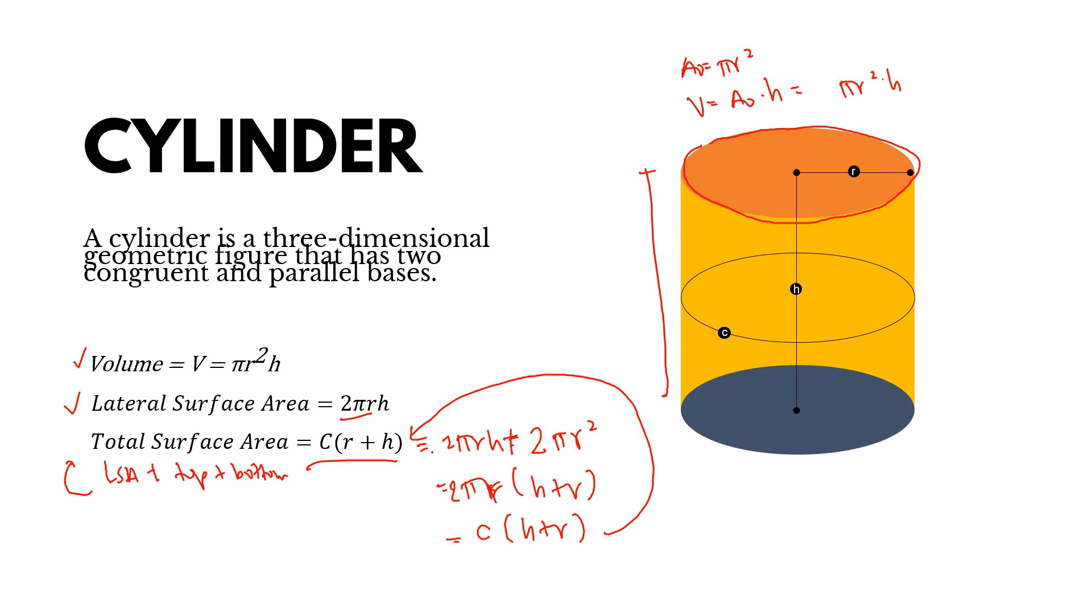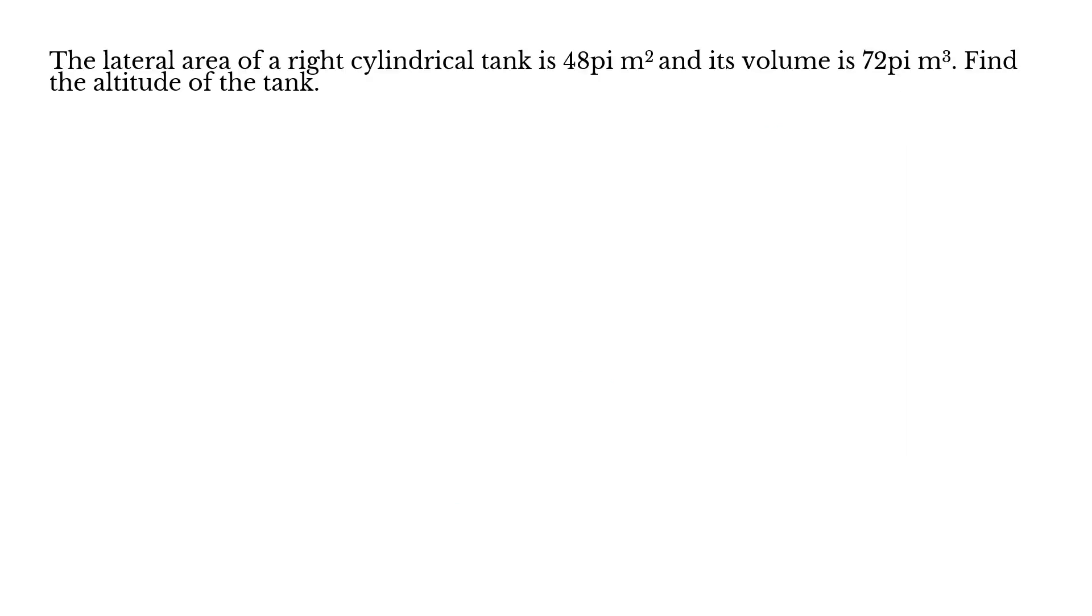Let's solve 3 sample problems. Problem 1: The lateral area of a right cylindrical tank is 48π m² and its volume is 72π m³. Find the altitude of the tank.